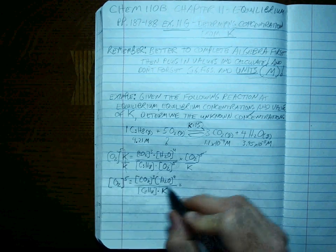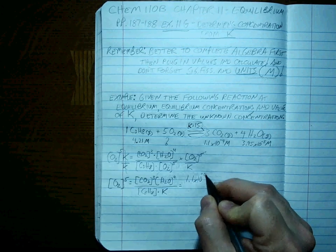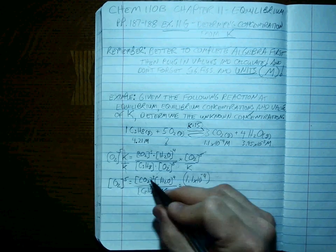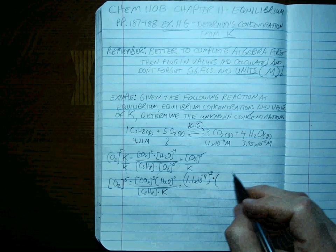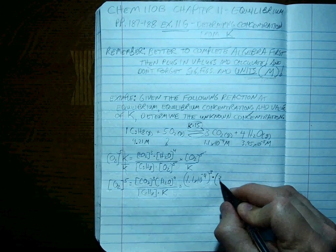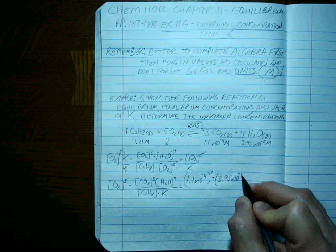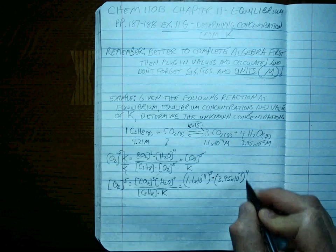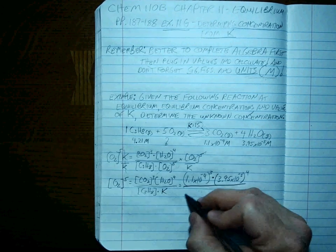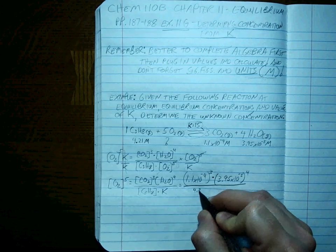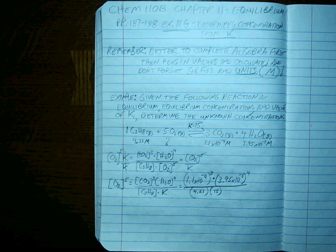We've solved for the one variable that we need. Now let's plug in our values. CO2 is 1.1 times 10 to the minus fourth cubed. Don't forget the cubed. Don't try to add, we're multiplying here. 3.95 times 10 to the minus fifth taken to the fourth power. And these guys don't have any power at all. So it's 4.21 times 15.